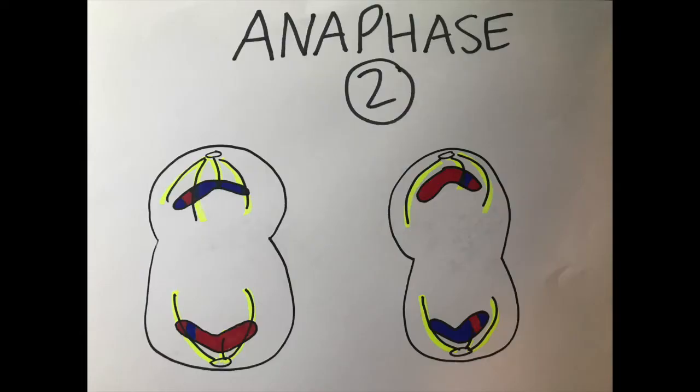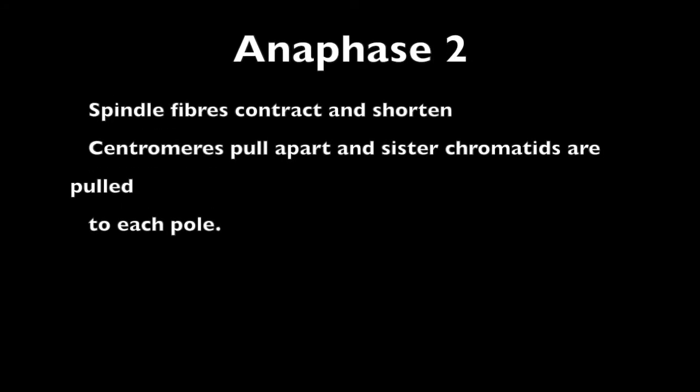Next, in anaphase II, the spindle fibers contract and shorten. The centromeres pull apart and the sister chromatids separate and are pulled to opposite poles by the spindle fibers.